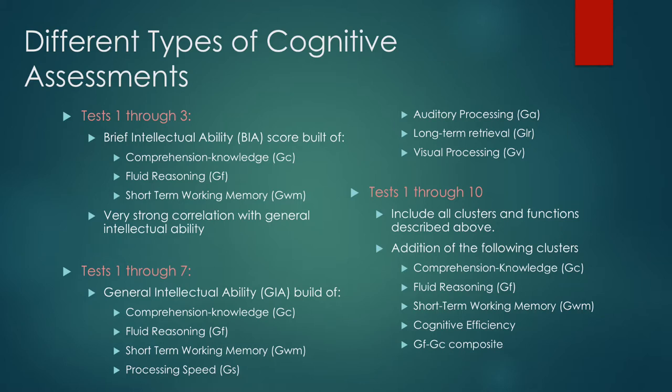The different types of cognitive assessments within the cognitive assessment test: Tests 1 through 3 are brief intellectual ability tests and the score is built from comprehension knowledge, fluid reasoning, and short-term working memory. Tests 1 through 7 test general intellectual ability. Tests 1 through 10 include all of the clusters and functions described above and additional clusters such as: comprehension knowledge, fluid reasoning, short-term working memory, cognitive efficiency, and the Gf-Gc composite.